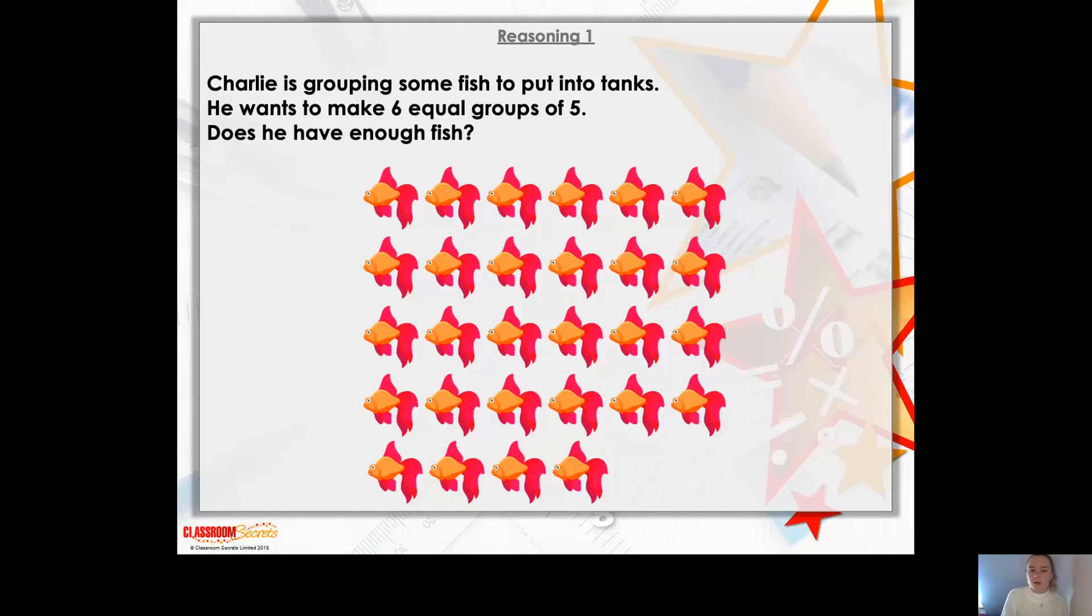One, two, three, four, five, six. We have six columns. So maybe that could be our six groups. Let's see if we've got five fish in each column. We've got five in the first, five in the second, five in the third, five in the fourth. Oh dear, we've only got four in the fifth and the sixth column.